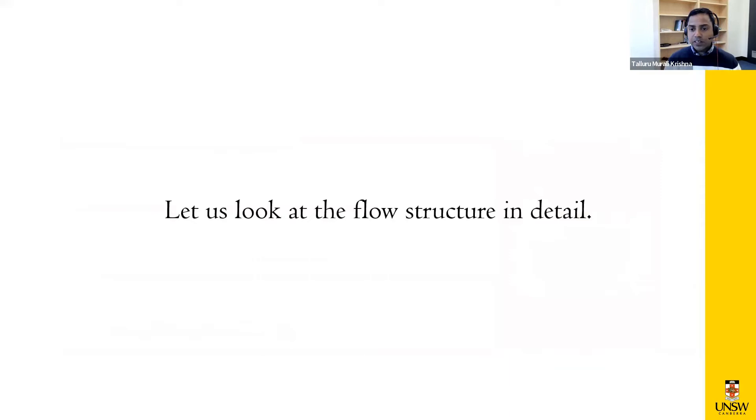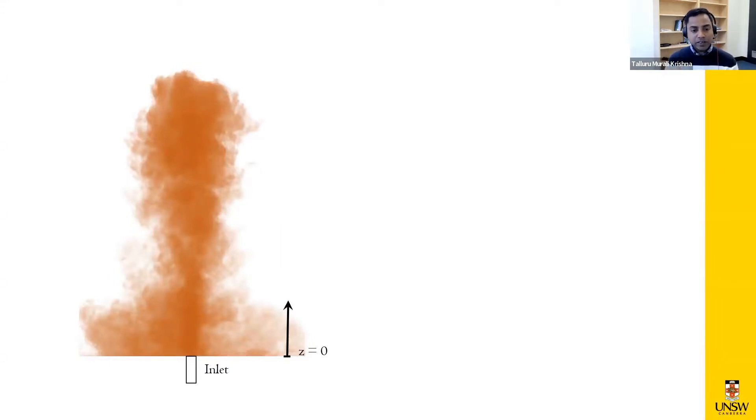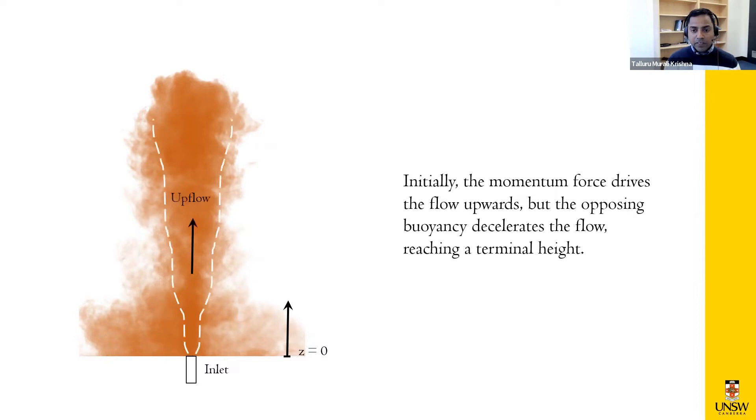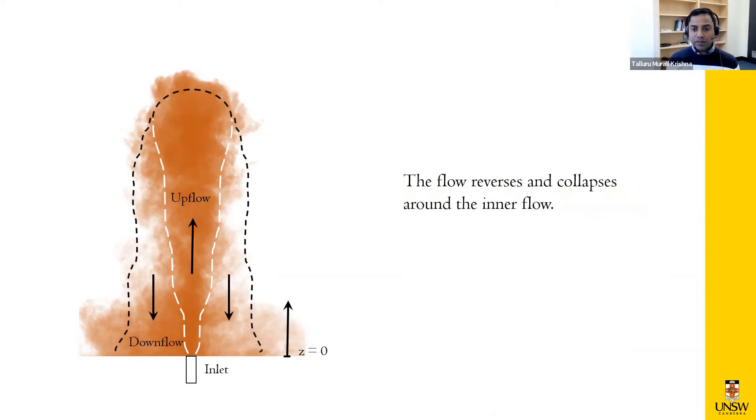So let's look at the flow structure more carefully and in more detail what we can learn from that. So if I take an instantaneous picture of a fountain, a well developed fountain, I would represent an inlet and I would choose a coordinate system. In this case, I would use Z as the Z equal to zero at the inlet. And what we have is initially, the momentum force is dominant. So it will push up the flow rising up and that region we call as the upflow. But eventually, the opposing buoyancy because of density gradient, it is decelerating the flow, which means when the force is balanced, you reach a terminal height and then the flow will return, which we call as the downflow.